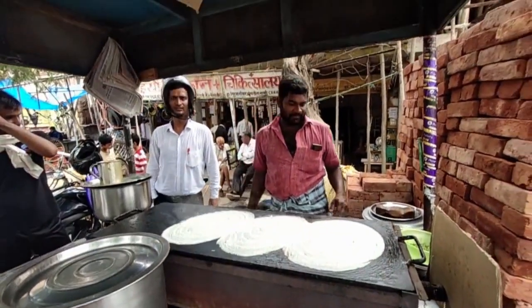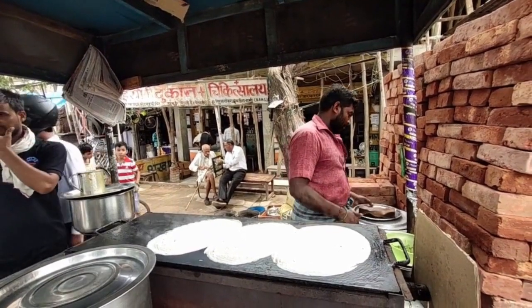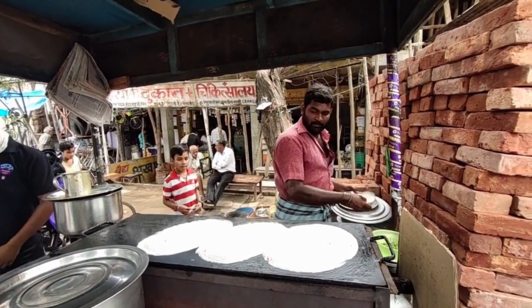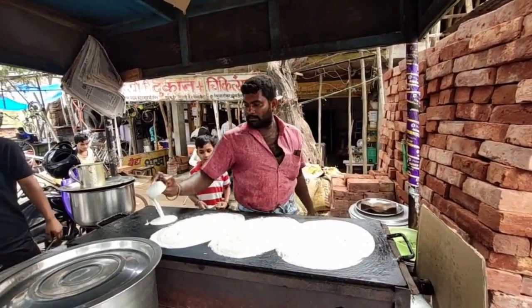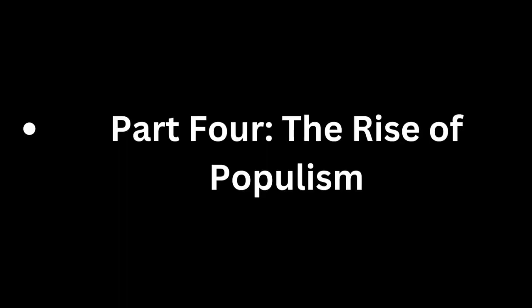In 1977, she called for fresh elections and was defeated by a coalition of opposition parties called the Janata Party.